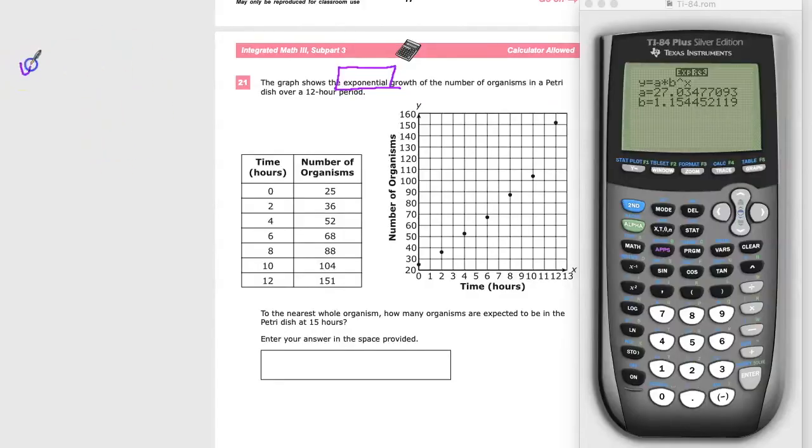It shows me the exponential equation a times b to the x power and then y is equal to, our a is 27.03 something around in there, and then times our b value of 1.15. And I'm going to raise that to, these are hours, it wants to know what 15 hours is.